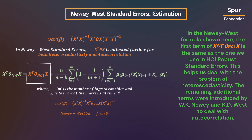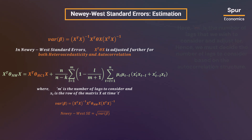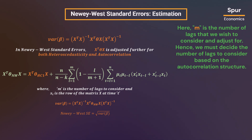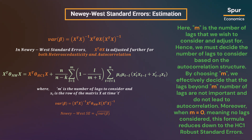This helps us deal with the problem of heteroscedasticity. The remaining additional terms were introduced by W.K. Newey and K.D. West to deal with autocorrelation. Here, M is the number of lags that we wish to consider and adjust for. Hence, we must decide the number of lags to consider based on the autocorrelation structure. By choosing M, we effectively decide that lags beyond M are not important and do not lead to autocorrelation. Moreover, when M equals zero — meaning no lags considered — this formula reduces down to the HC1 robust standard errors.